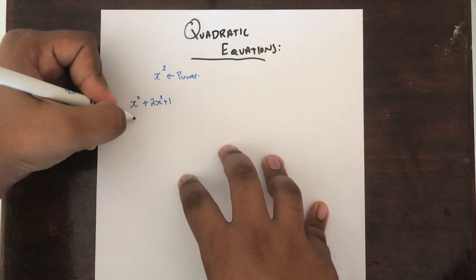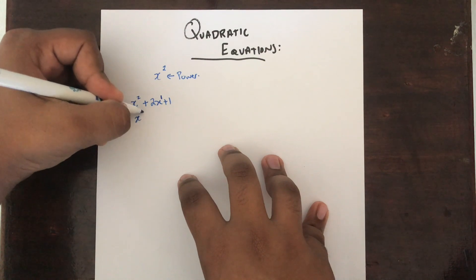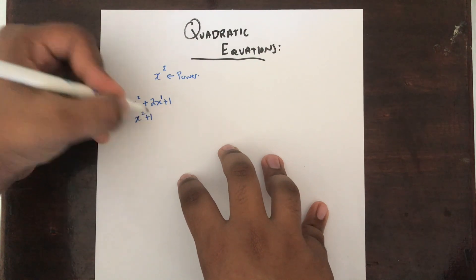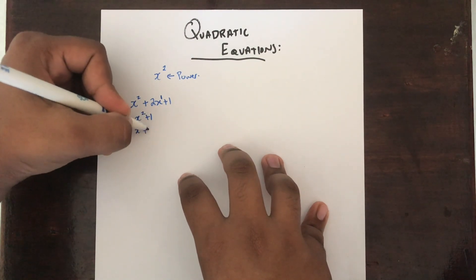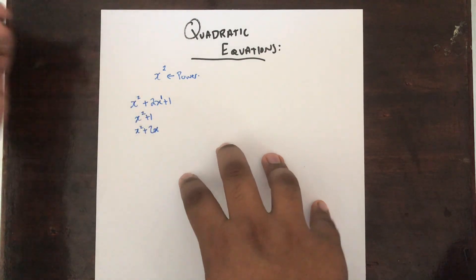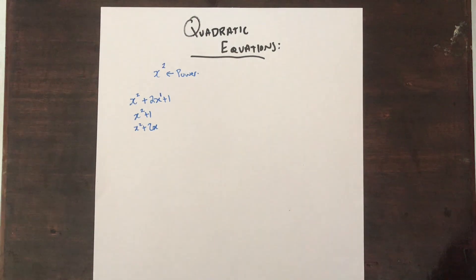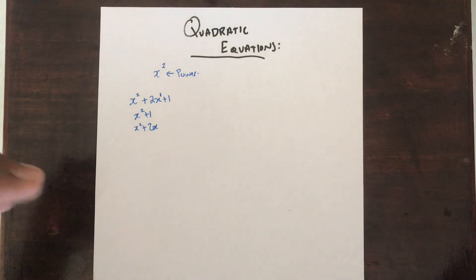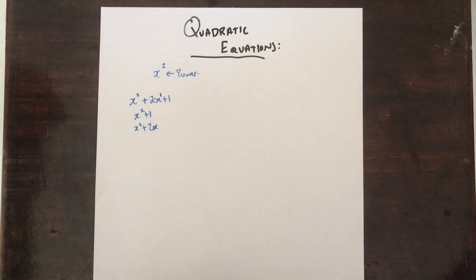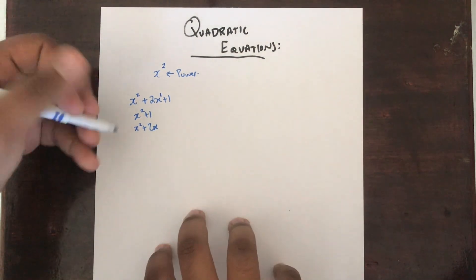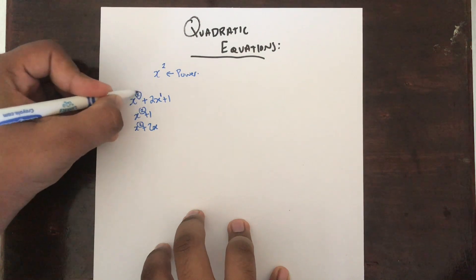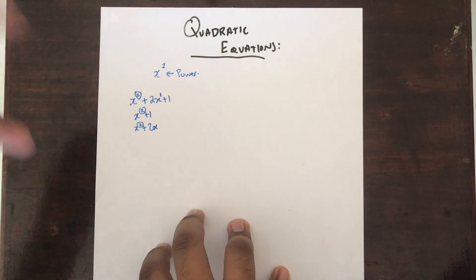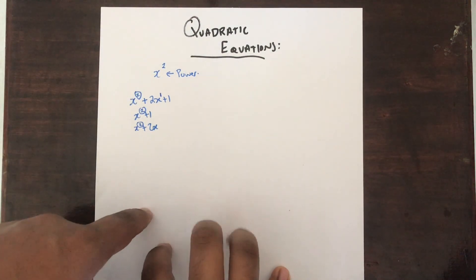Alternatively, you can also have a quadratic equation like x squared plus 1, or just x squared plus 2x. It doesn't really matter how you write a quadratic equation, as long as the highest power of x is power 2.